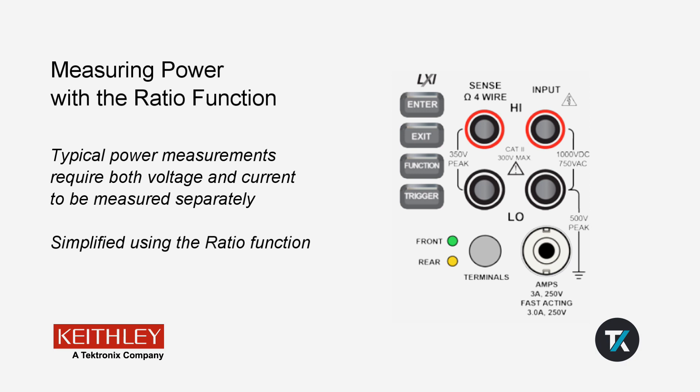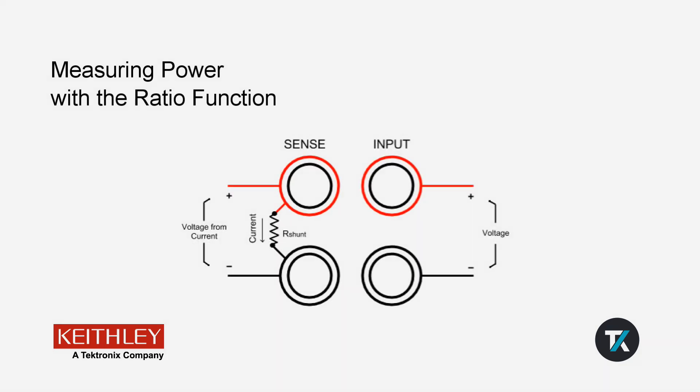This is possible because the ratio function measures the voltage across the sense terminals and the voltage across the input terminals at the same time. We will use a shunt resistor on the sense terminals to measure current, and we'll measure voltage on the input terminals.